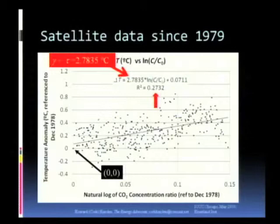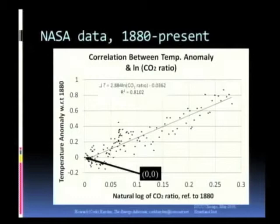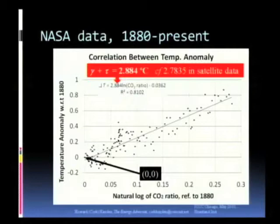Well, that's really a short length of time. So now I'll go back to 3 millionths of 1% of the age of the Earth. Namely, 130 years. 1880 to the present. The 00 is on the graph again. This time you'll notice that gamma plus tau with the slope of that line is 2.884 Celsius versus 2.78 in the satellite data. But the R squared is a very impressive 81%.